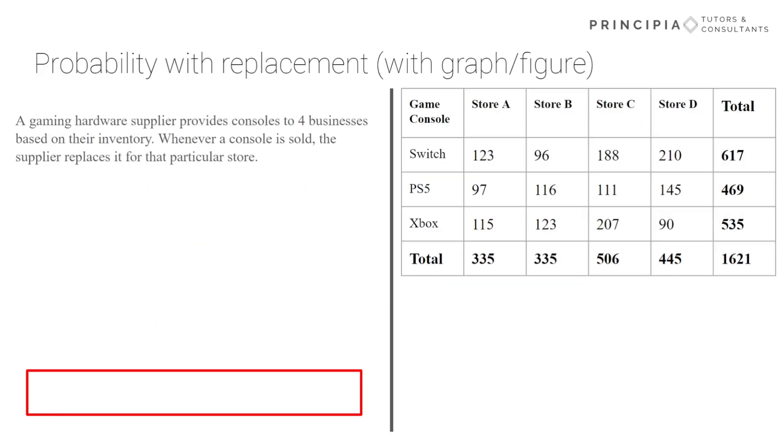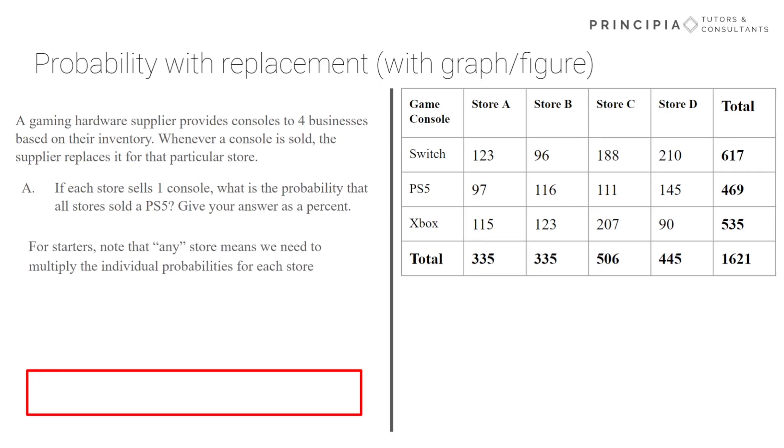Okay, let's do another with replacement, but this time we'll use a graph or figure. So first, we're asked, store selling one console, what is the probability all stores sold a PS5? Make sure you give your answer as a percent. Just be sure to note that any store means we need to multiply individual probabilities for each store. With that clue, pause the video, attempt to solve it on your own.